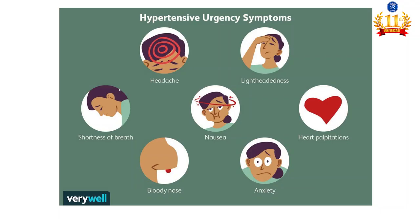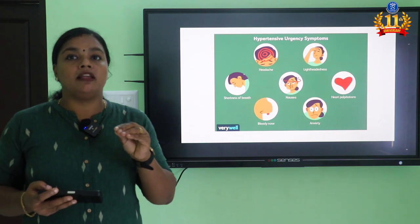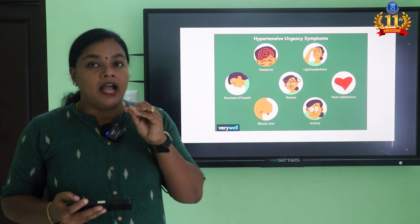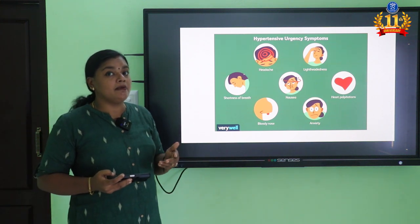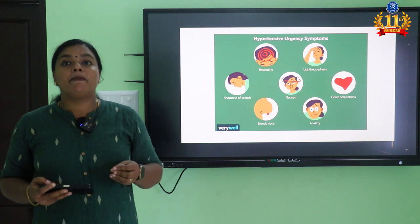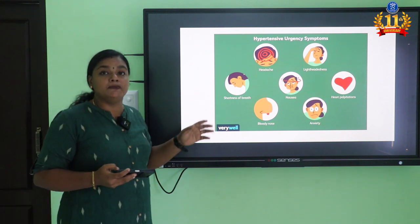Main symptoms of hypertensive crisis include headache, lightheadedness, heart palpitations, nausea, anxiety, bloody nose, and shortness of breath. MAOIs are the main antidepressant; along with that, we cannot take tyramine-containing food. If taken, the patient will develop hypertensive crisis with these symptoms.